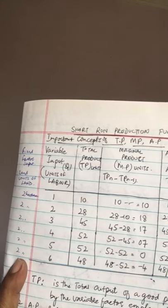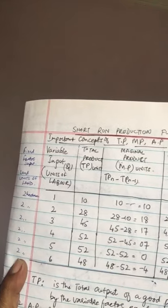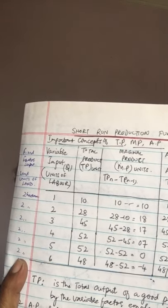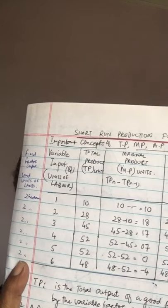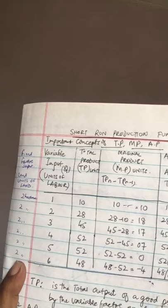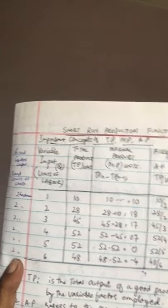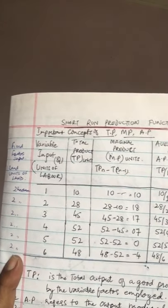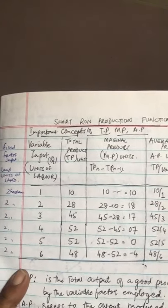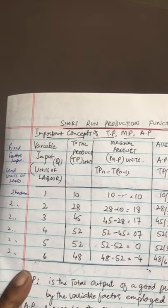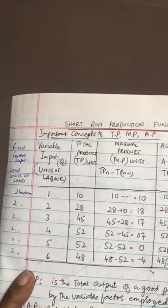In the long run, if we set a factor ratio — say one is to two — we keep it that way throughout. That's the basic difference. In the short run, if the input of one factor is increasing while all other factors remain constant, then the proportion between the factors is changed.